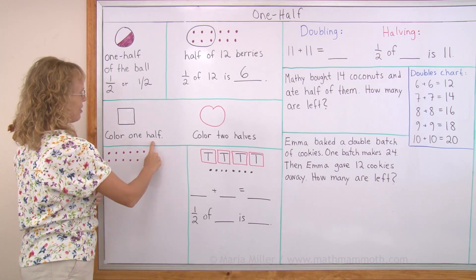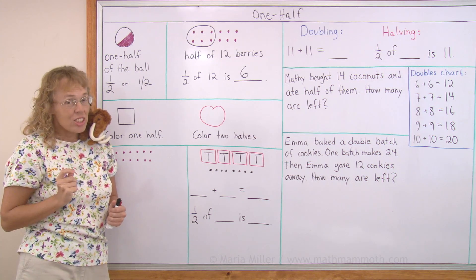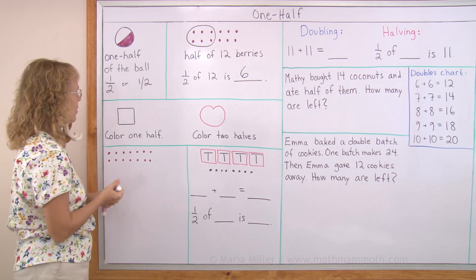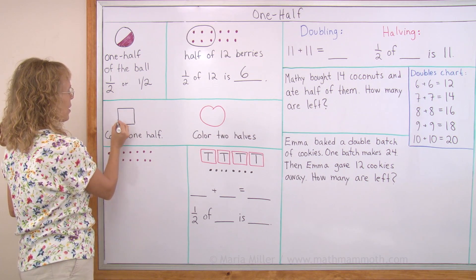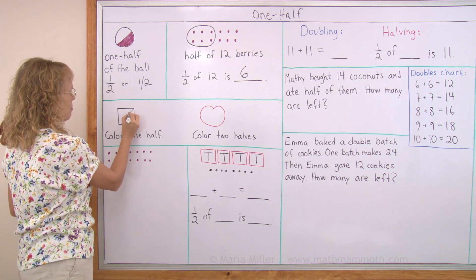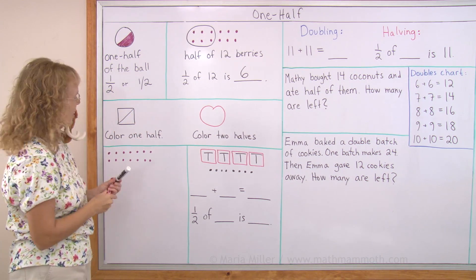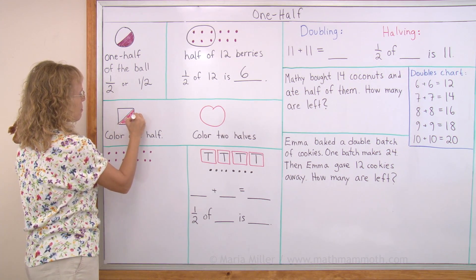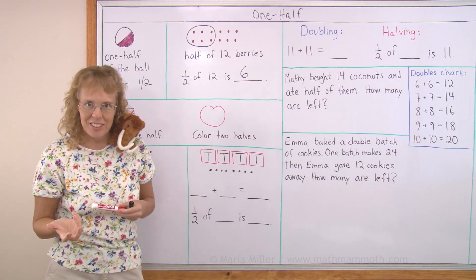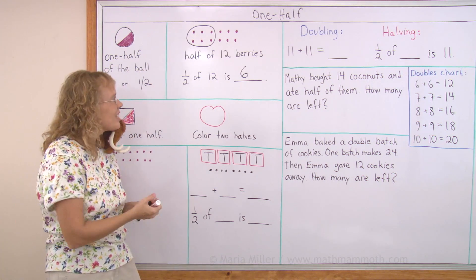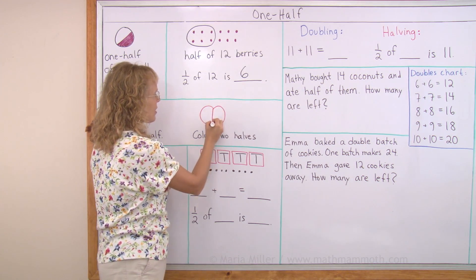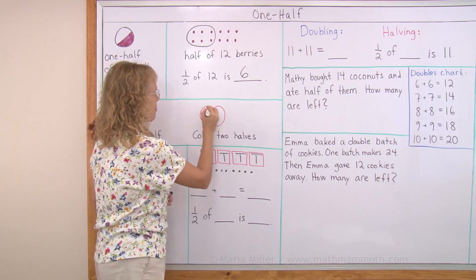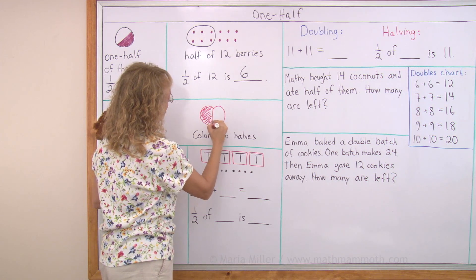Color one half. First I need to divide this shape into two equal parts and then I color one part. So I could go this way, I could go this way or this way — different ways — and then color one half. Over here, color two halves. Again, I first divide it into two equal parts, but then I color both parts, both halves. So actually, I end up coloring the whole apple.